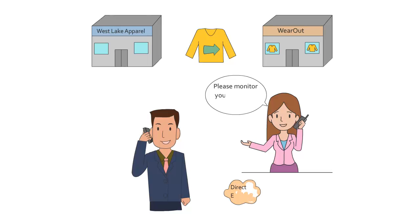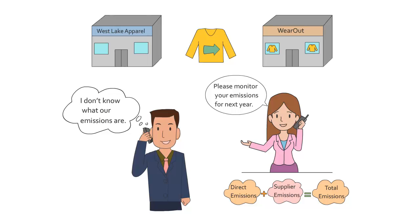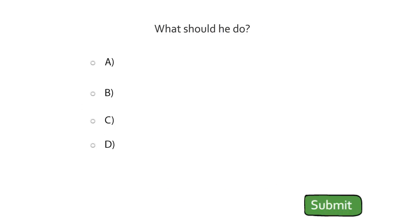Wearout already monitors its own emissions, but starting next year, they plan to include the emissions their suppliers create in producing the clothes that Wearout sells. They ask that Leo begin monitoring his factory's energy consumption and greenhouse gas emissions so they can include them in the report next year. Leo has no idea what their greenhouse gas emissions might be. What should he do?